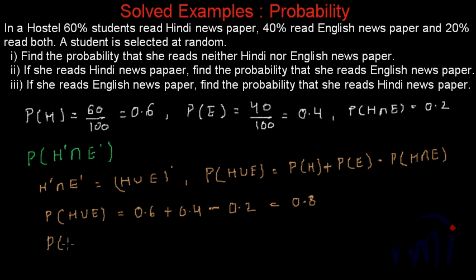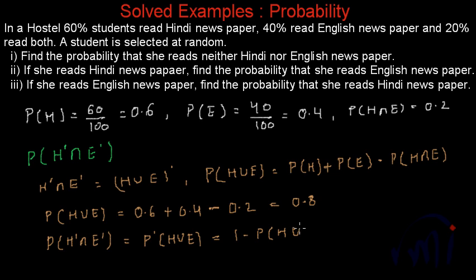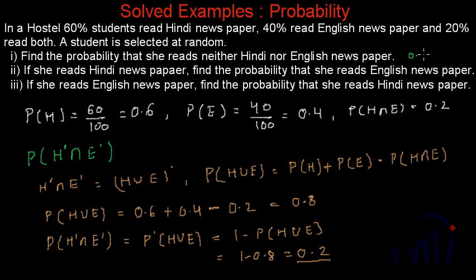So the probability that a student is not reading any of the newspapers — Hindi or English — will be equal to the complement of the probability of Hindi union English, which is 1 minus P(H∪E). That gives us 1 minus 0.8, which equals 0.2. So 20% of students are not reading any of the newspapers. The answer for the first question is 0.2.